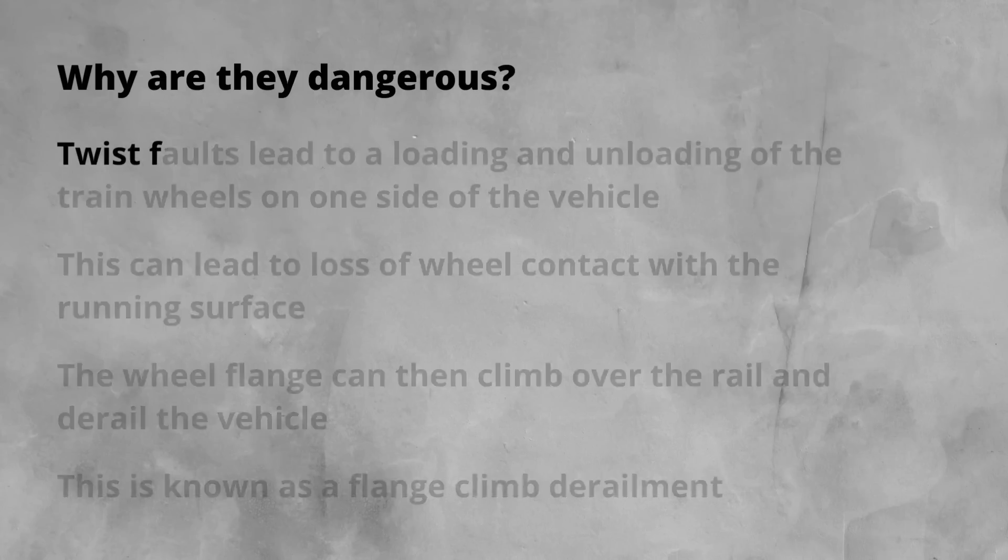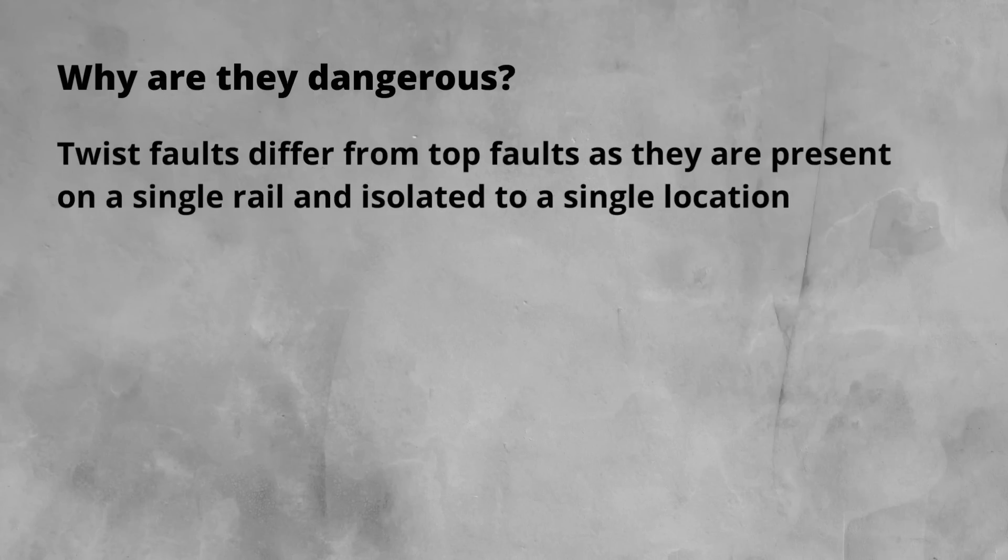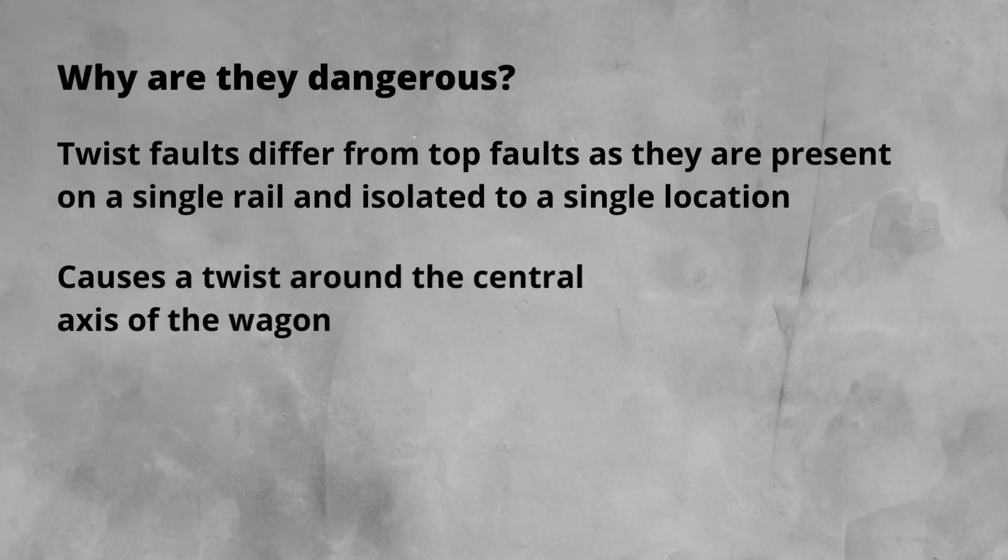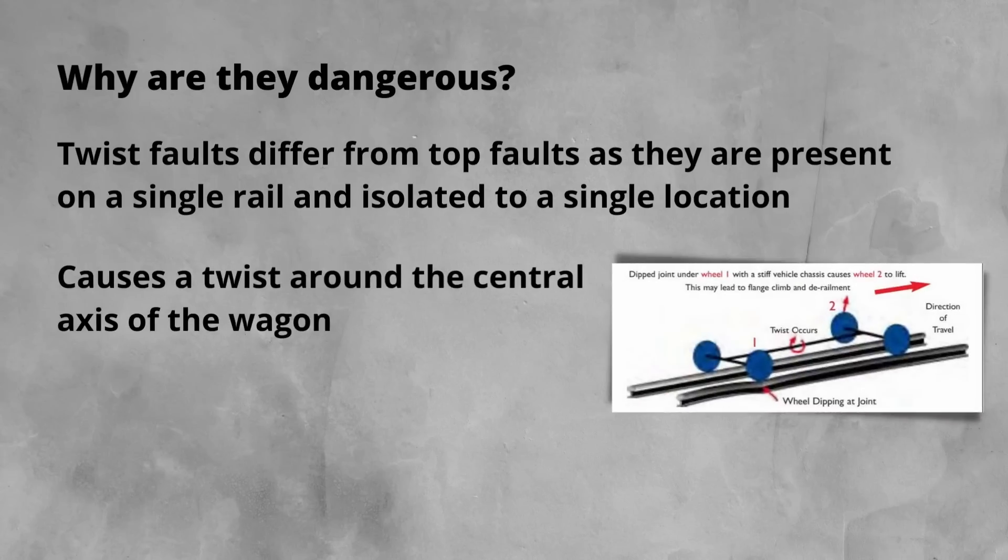A twist is different to a top fault in that the dip is on only one rail and is isolated to a single location. It also causes the wagon to twist around its central axis. Imagine hitting a pothole in your car, where one corner of the car drops. This is similar to a twist fault. It's also similar in the way that it can worsen over time, as the loading and unloading causes further deterioration.